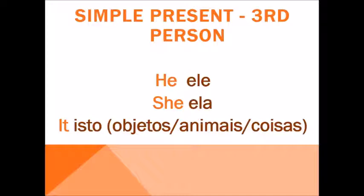I don't always need to use he, she, and it in that exact form. Instead of 'he,' I can use a masculine name. Instead of 'she,' I can use a feminine name. Instead of 'it,' I can use the name of the object — like a chair, a computer, a cell phone, or a bottle. Or if it's an animal, like a dog or a cat, just say the name.